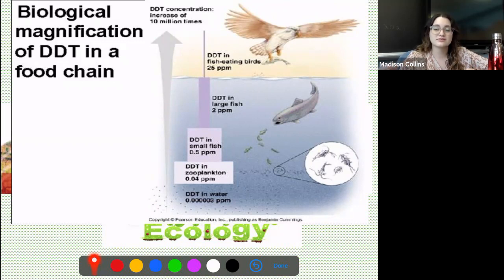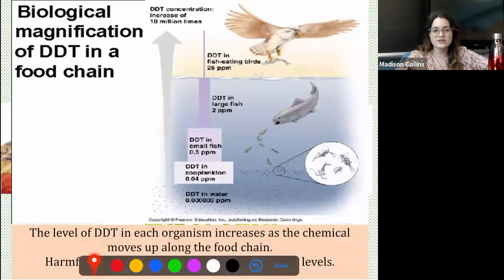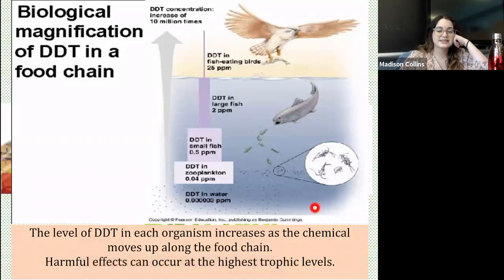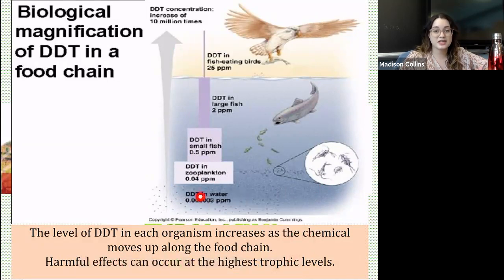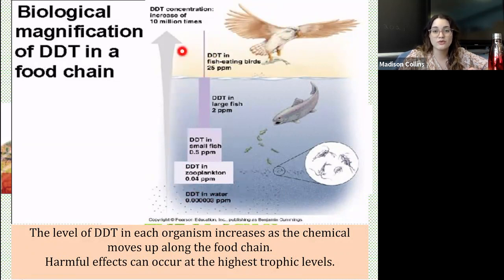This eagle eating fish affected by DDT is suddenly really affected by this poison. This is what led to the thinning of those eggshells — they had such a large concentration of DDT that it was causing them to die and they couldn't sustain life. The level of DDT in each organism increases as the chemical moves up through the food chain, because the chemical doesn't disappear — it just keeps moving through the chain. Harmful effects occur at the highest trophic levels, like with the eagle, because DDT has been throughout the entire food chain and is in the highest concentration when it reaches that top predator.